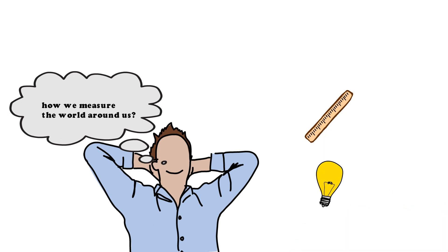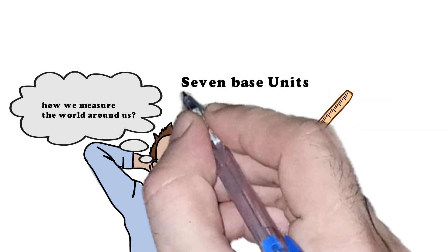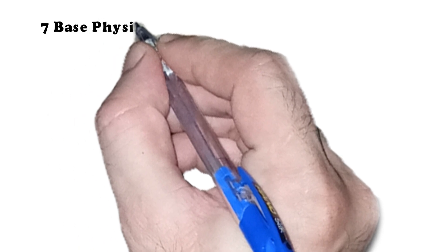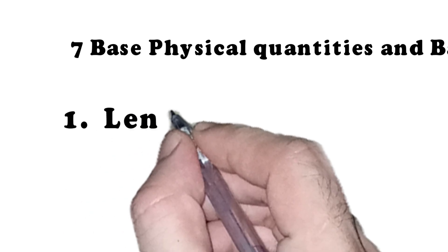Every measurement can be traced back to seven fundamental base units known as the SI base units. These seven base units are the foundation of all physical measurements, each representing a unique physical quantity.